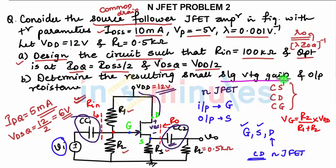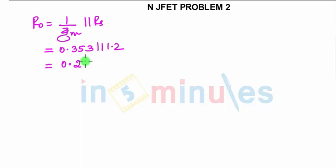Determine the resultant small signal output resistance without considering RL. The output resistance without considering RL will be 1 upon GM parallel RS, if you are neglecting the value of RO. This is the approximate analysis. So it will be 0.353, which is 1 upon GM in parallel with 1.2k. Both are in kilohms, so you will get it as 0.273 kilohms.